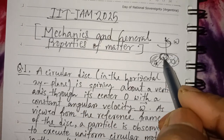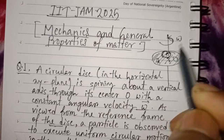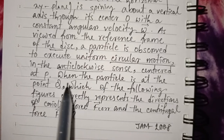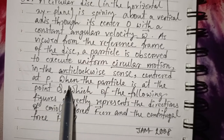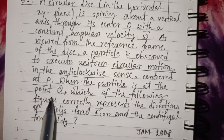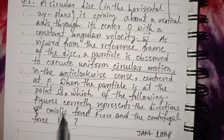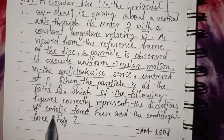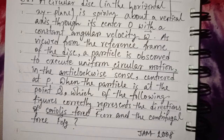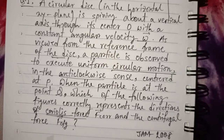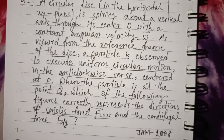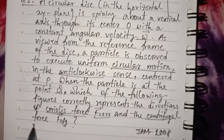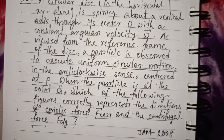It is clear that the motion is centered at P. When the particle is at point Q, which of the following figures correctly represents the direction of Coriolis force? The Coriolis force is denoted F_COR.